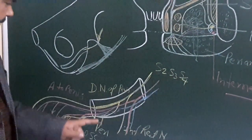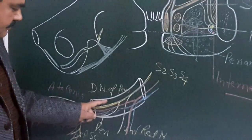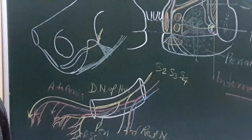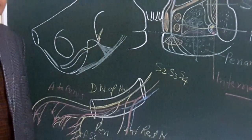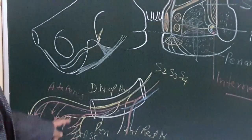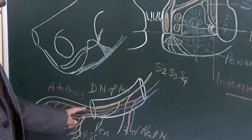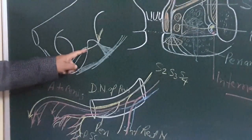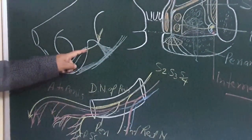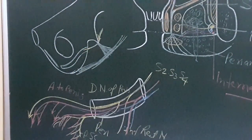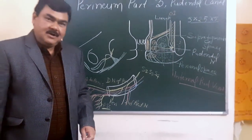The pudendal nerve is clinically very important in the case of females. During surgery of the lower part of the vagina, this pudendal nerve can be blocked by giving local anesthesia. So this is all about the pudendal canal and its contents.